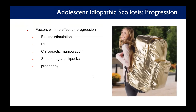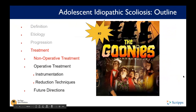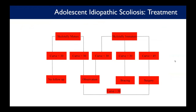Number three on the movie list is The Goonies — the ultimate kid adventure movie with treasure maps, pirates, and everything. In terms of treatment: for a skeletally mature individual with a curve less than 30 degrees, nothing needs to be done if they're pain-free. If the curve is greater than 30 degrees, observation is needed — especially curves in the 40–50 degree range.